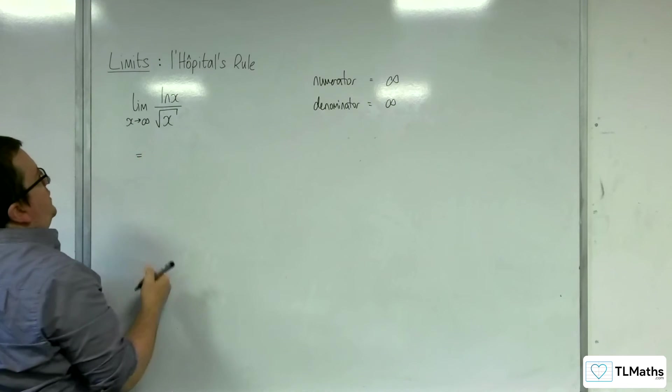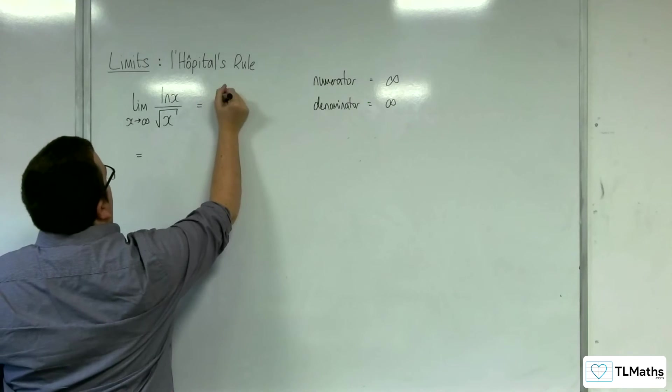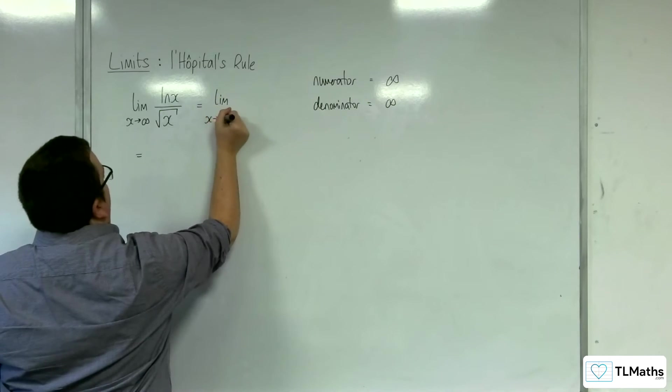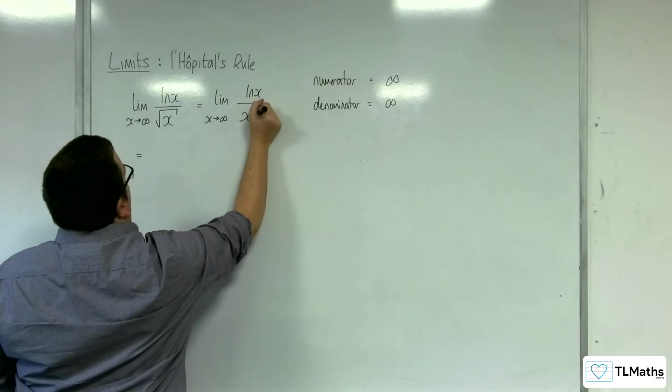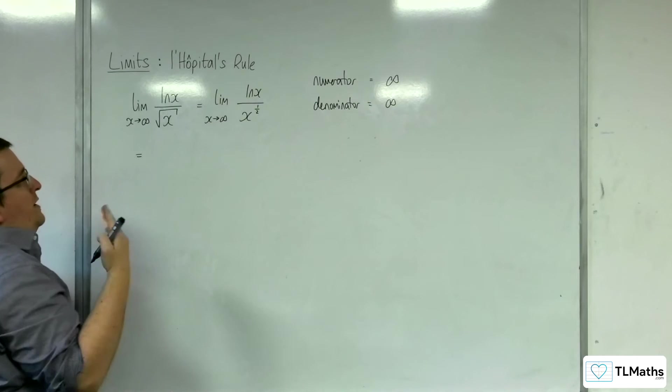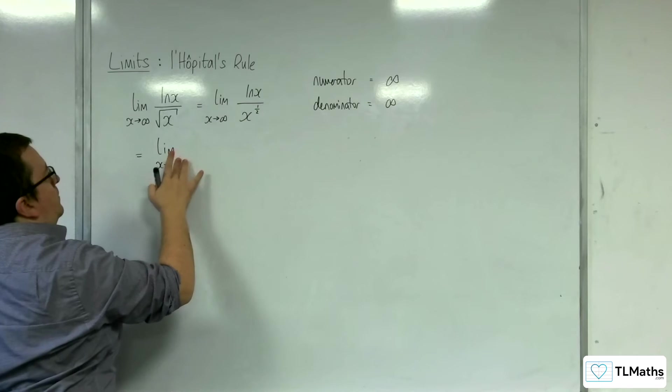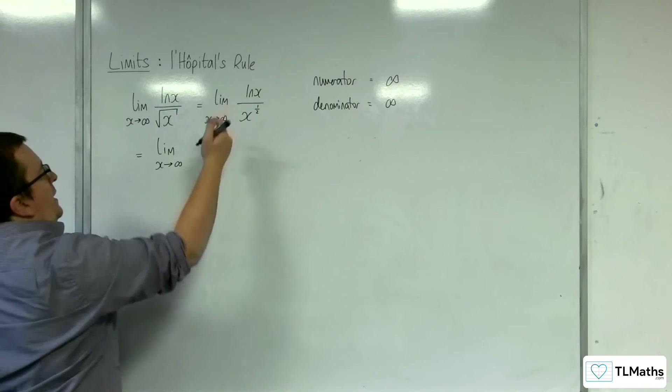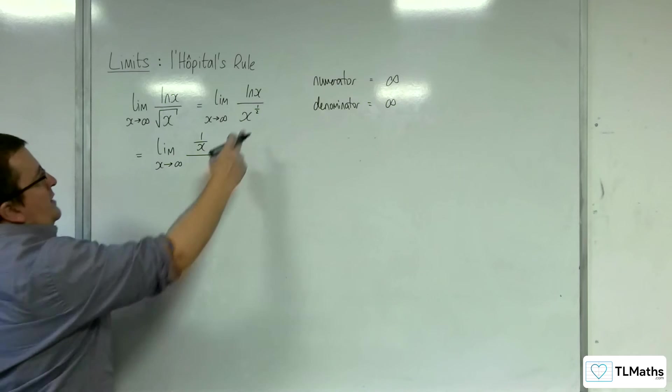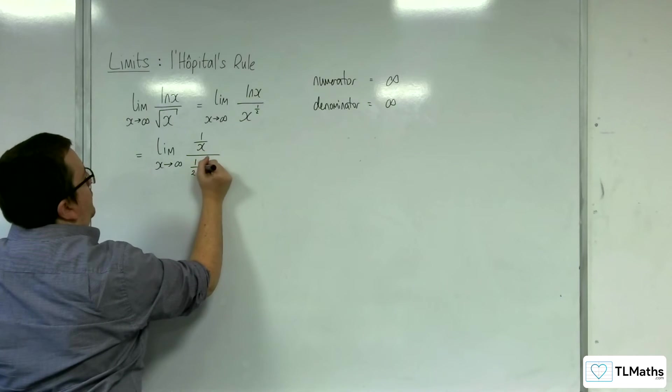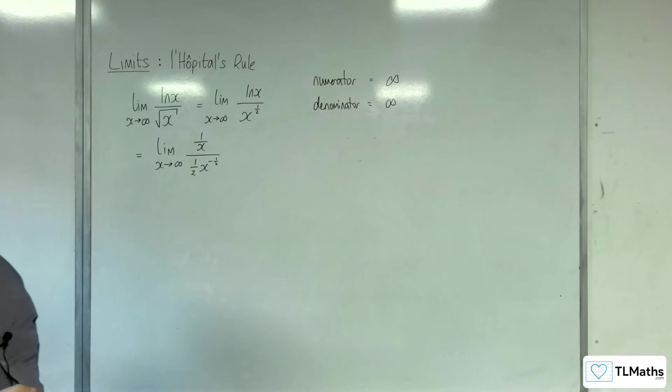So what I need to do is differentiate the top and the bottom. The first thing I'm going to do is just rewrite this as the limit as x tends to infinity of log x over x to the half. Now if I differentiate the numerator, log x differentiates to 1 over x, and x to the half differentiates to 1 half x to the minus a half.